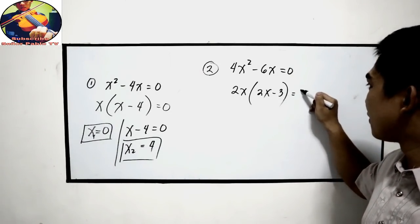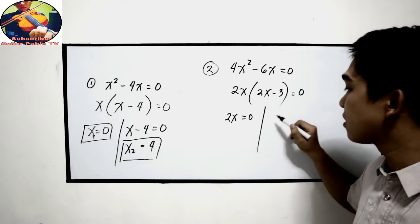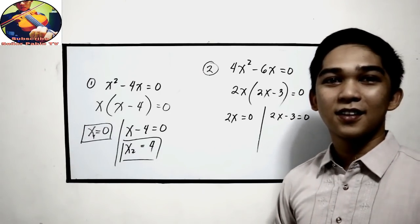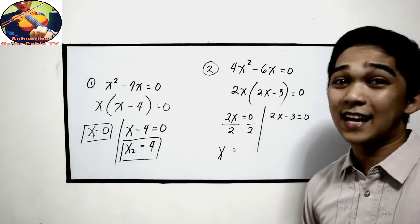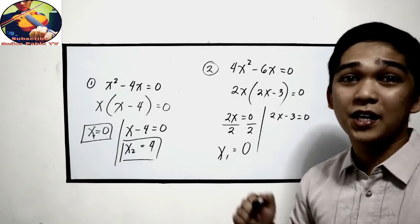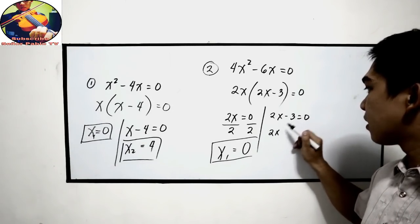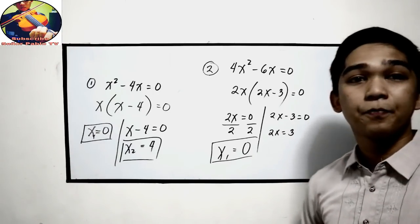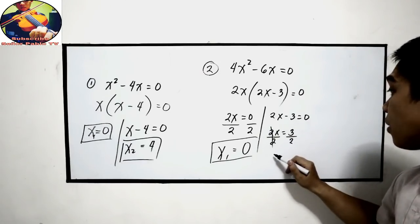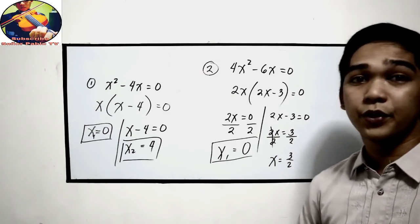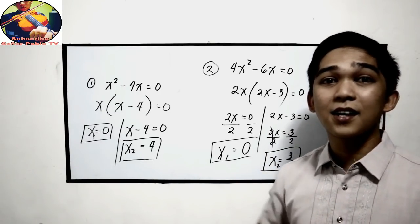The factored form is equal to 0. Equate to 0: 2x is equal to 0, and the other factor is 2x minus 3 is equal to 0. For the first factor, x is equal to 0 divided by 2, which is 0 — that is x sub 1. Next, transpose negative 3 to get positive 3, then divide both sides by 2. So x sub 2 is equal to 3 over 2. That is the greatest common factor method.